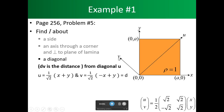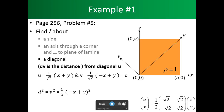Since v equals our distance, we need to square d, which is the same as squaring v. This gives us one half of the quantity negative x plus y, squared. When we multiply it out and group terms, we get one half times the quantity x squared plus y squared minus 2xy.